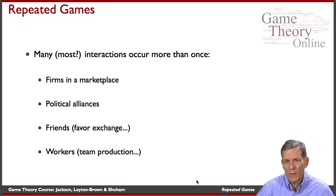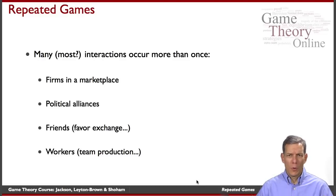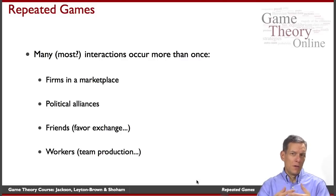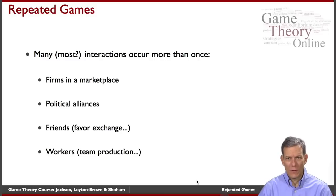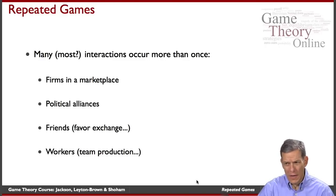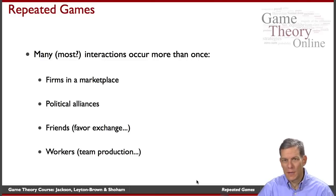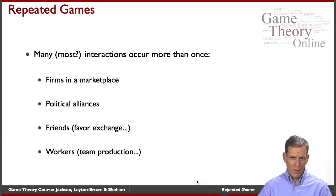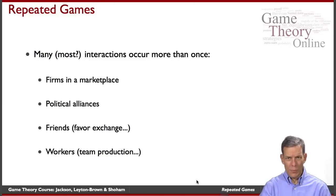Friends exchanging help — do you help your friends out when they need it, and do they help you back? Workers in team production have to help coworkers day after day, sometimes doing tasks that don't go noticed. These are situations where repetition can make a difference, and understanding it will be an important aspect of understanding how the repetition affects the play. To fix ideas, let's talk a little bit about OPEC, which was a cartel formed in the early 1970s.